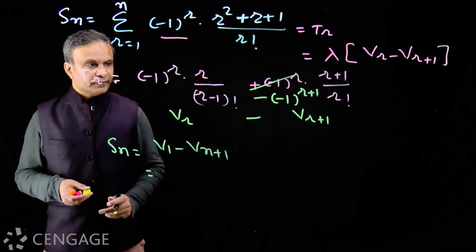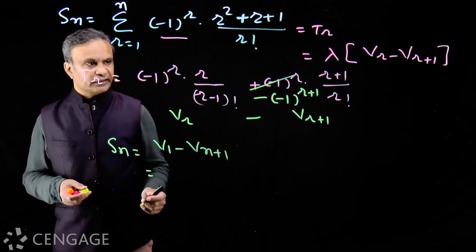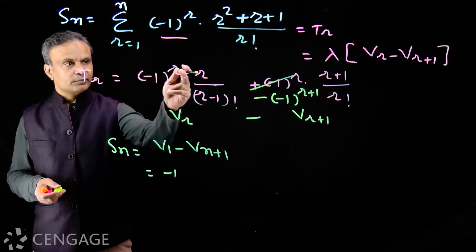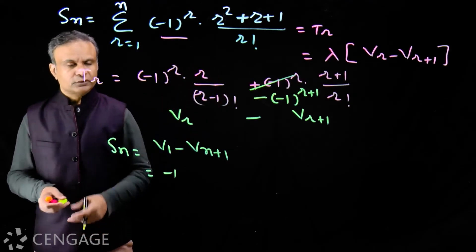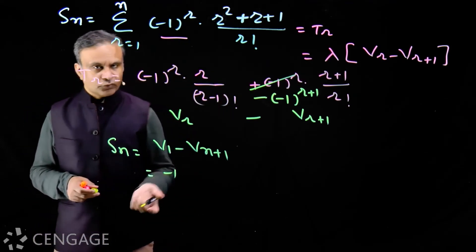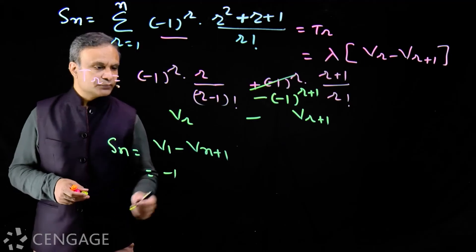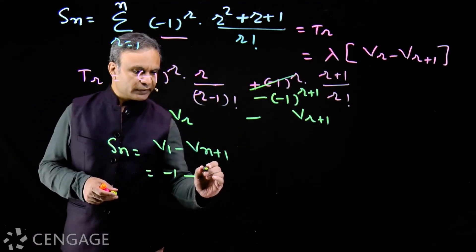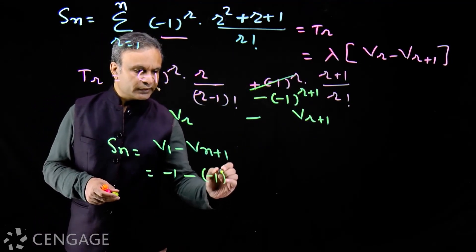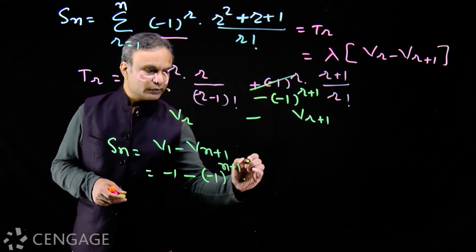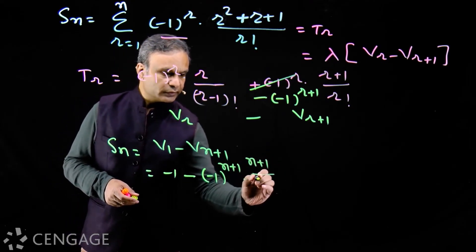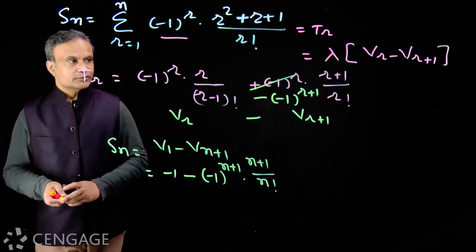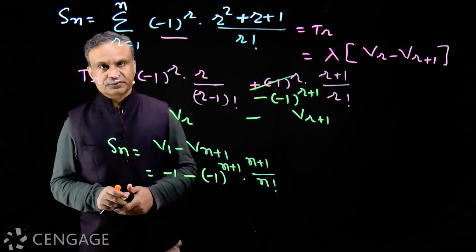For v1, putting r = 1: v1 = (−1)^1 · 1 / 0! = −1/1 = −1. For v(n+1), putting r = n: v(n+1) = (−1)^(n+1) · (n+1) / n!. So the sum of n terms is −1 minus (−1)^(n+1)·(n+1)/n!.